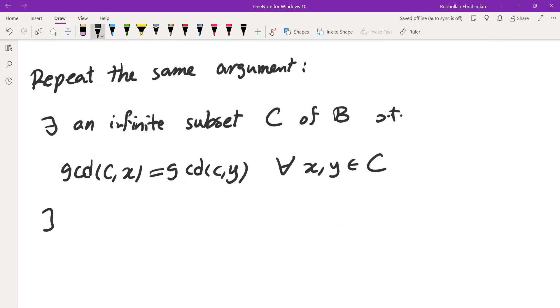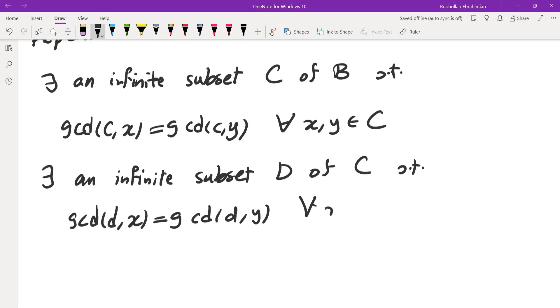So from here we obtain that gcd(C,X) is the same as gcd(C,Y) is the same as gcd(D,X) is the same as gcd(D,Y) for again every X and Y in D.